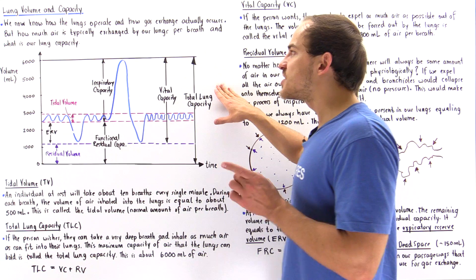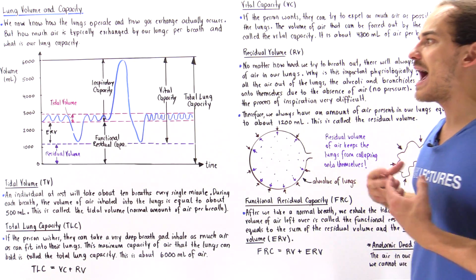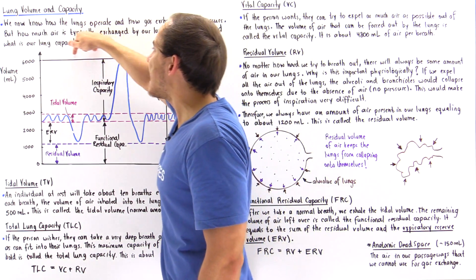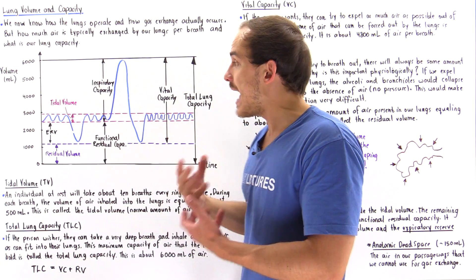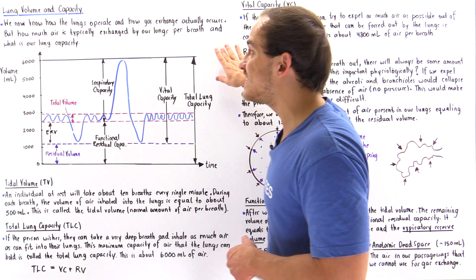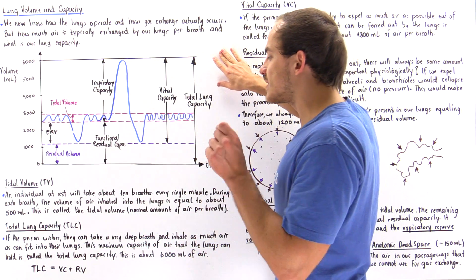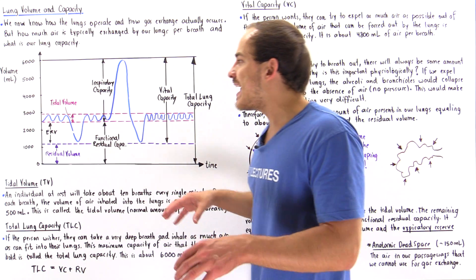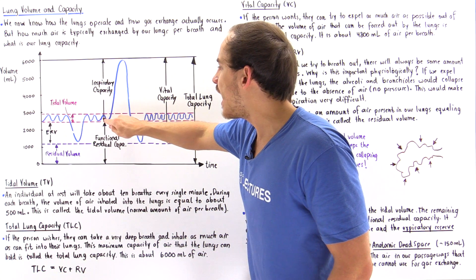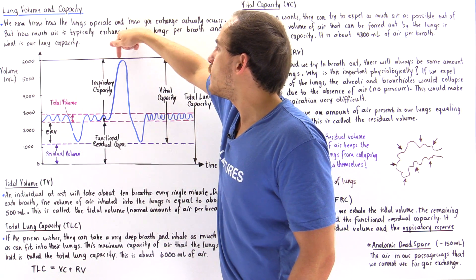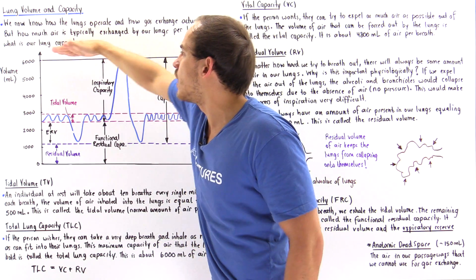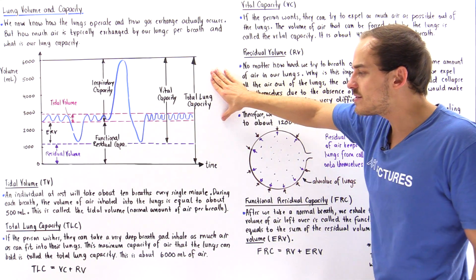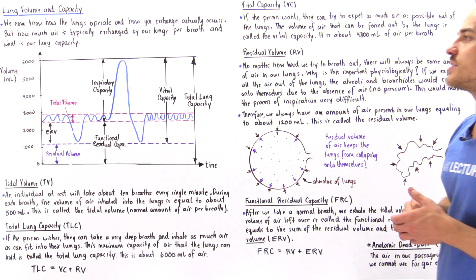What exactly is the maximum amount of air that the lungs can actually store? This is called the total lung capacity. It's the distance between the maximum point on the curve and the zero line, and on average for an individual it equals about 6,000 milliliters or 6 liters of air. If a person takes a very deep breath and goes all the way up to the maximum point, that distance from the black line to zero represents the total lung capacity.